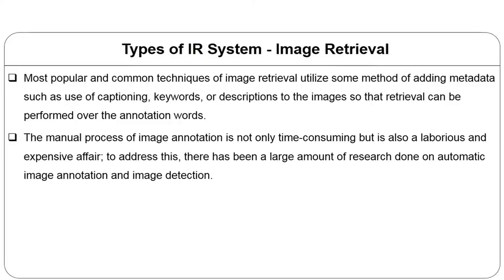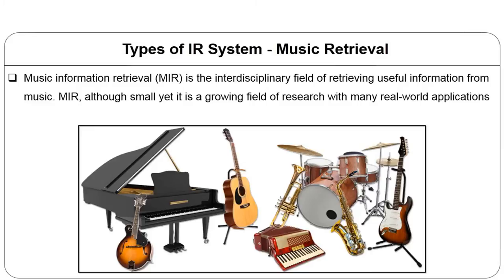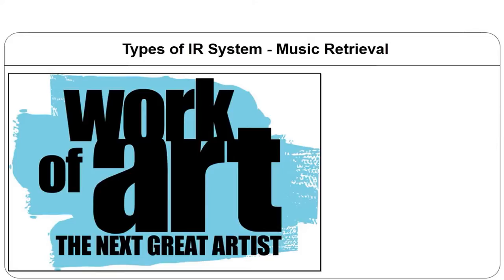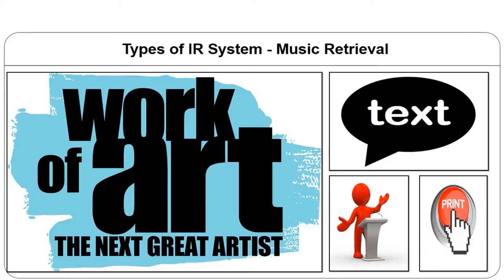Music Information Retrieval, known as MIR, is an interdisciplinary field and a subfield under IR itself. It is a small but growing field of research with many real-world applications. Researchers working in this area come from different backgrounds ranging from computer science to musicology, psychology, instrumentation, and signal processing. In addition to these systems, IR may deal with particular types of entities or objects such as works of art, software, courses offered at a university, people, products, or printed and digital media. All these types carry information and hence fall under the purview of information retrieval systems.